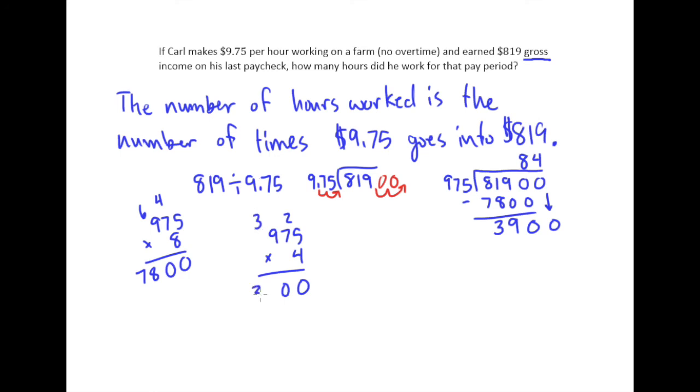So, great. We get exactly 3,900. So this tells me that Carl worked 84 hours.